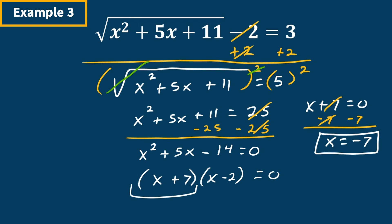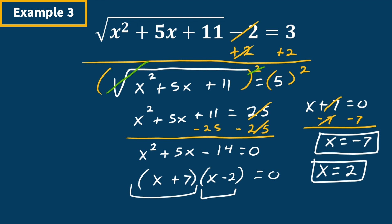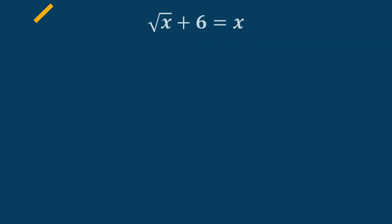So x = −7 is one of our solutions. Doing the same with the second binomial, x minus 2 equals 0, giving x equals 2 as our second solution. Remember, you have to check both answers by plugging the x values back into the original equation.